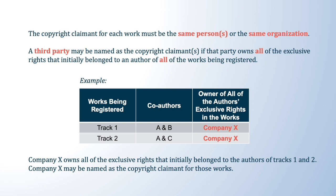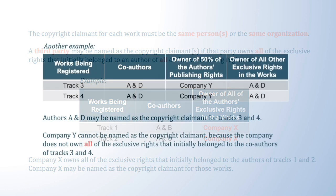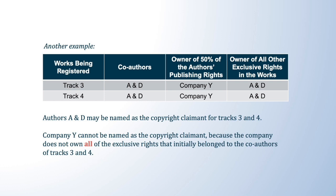For example, authors A and B created track one, and authors A and C created track two. A, B, and C transferred all of their exclusive rights in these works to company X. Tracks one and two may be registered with a group registration application by naming company X as the claimant. In another example, authors A and D created tracks three and four, but both authors transferred only 50% of their publishing rights to company Y, retaining the rest. Tracks three and four should be registered by naming authors A and D as the claimant, because company Y owns some but not all of the exclusive rights and therefore cannot be named as the claimant.